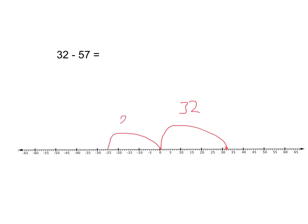You've got to take a jump of 25, and of course you know that if you start at 0 and take a jump of 25 downwards, you'll end up at negative 25.